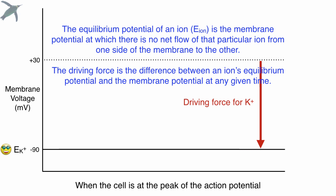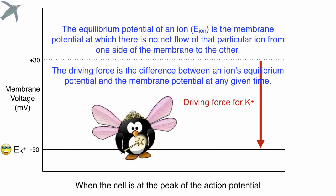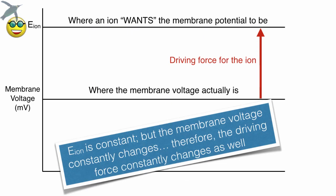The definitions should now be getting more clear. The equilibrium potential is the membrane potential where there's no net flow and the driving force is the difference between that value and where the membrane actually is. That's the key. That's really all it is. Now you have to remember that that equilibrium potential is constant, but the membrane voltage is constantly changing. So the driving force will also constantly change.